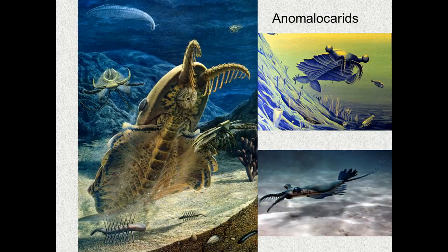What did trilobites have to be scared of? At this time, these are our top marine predators — our anomalocarids. To give you an idea of size, from head to tail probably ranging anywhere between six to eight, maybe some species reaching ten feet in length. These are the tertiary consumers of their time — top, top predators. Paleontologists think that these appendages at the very tips of their snout would grab a trilobite prey, break them open, and eat out the good parts inside. This is top of the food chain during this time.